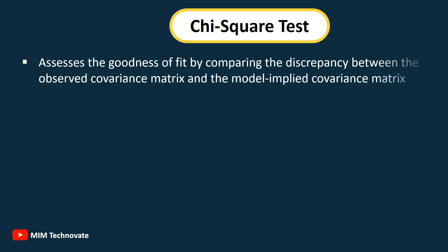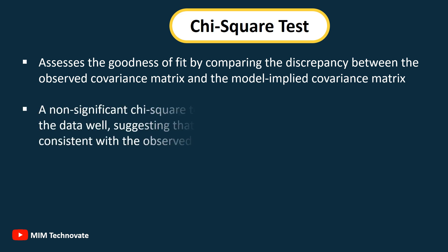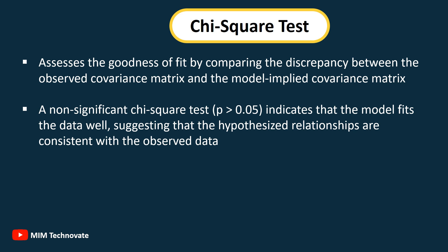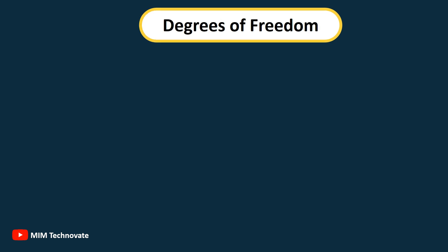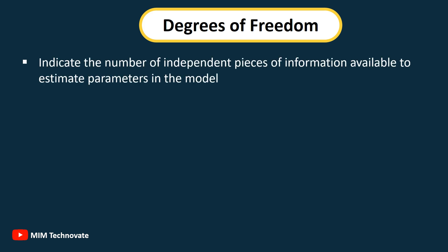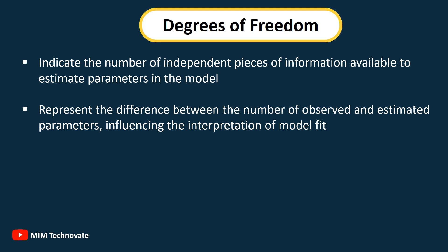Chi-Square Test: Assesses the goodness of fit by comparing the discrepancy between the observed covariance matrix and the model-implied covariance matrix. A non-significant chi-square test indicates that the model fits the data well. Degrees of freedom represent the difference between the number of observed and estimated parameters, influencing the interpretation of model fit.